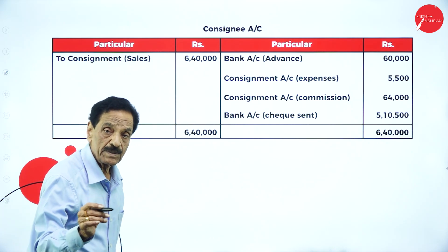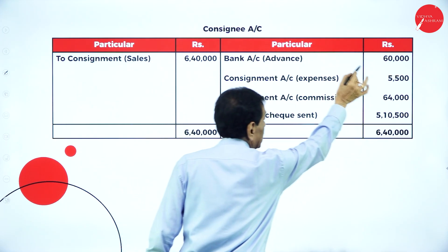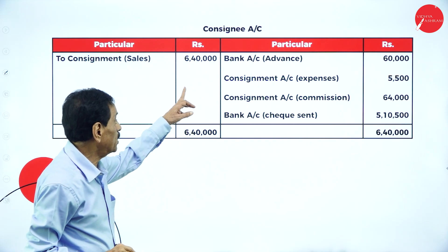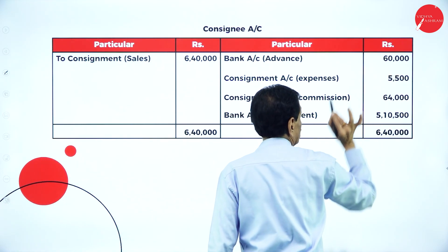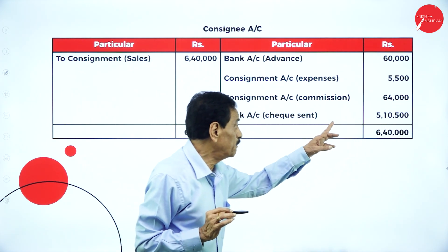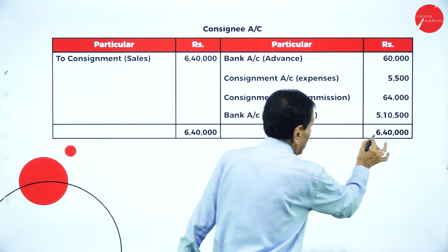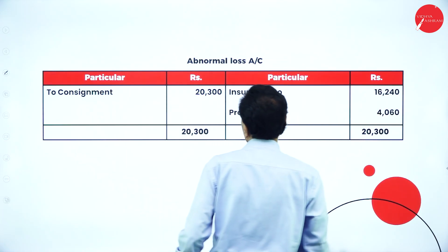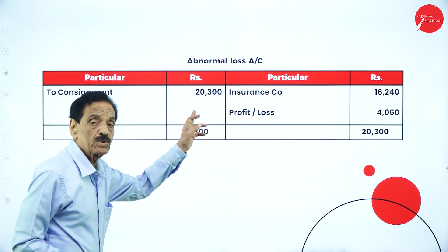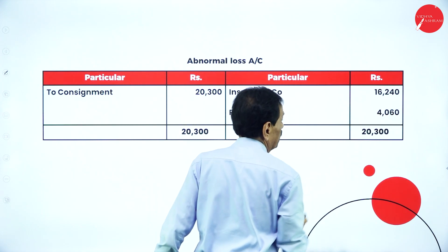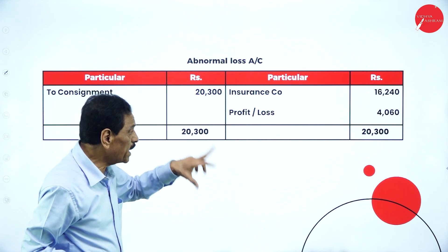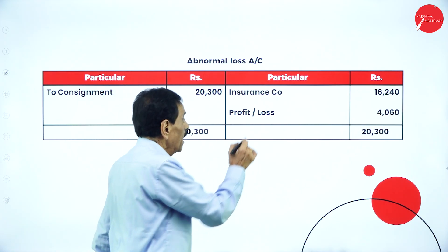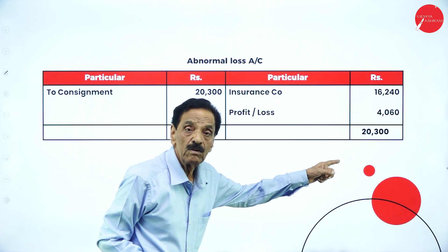The entire sales amount of Rs. 6,40,000 lies with the consignee. Out of that, the consignee deducts: advance Rs. 60,000, expenses Rs. 5,500, and commission Rs. 64,000. The balance of Rs. 5,10,500 will be sent by the consignee to the consignor by cheque. For the abnormal loss account: total loss Rs. 20,300, insurance company pays 80% = Rs. 16,240, and the irrecoverable amount transferred to P&L account = Rs. 4,060.